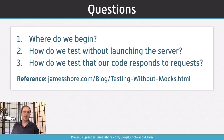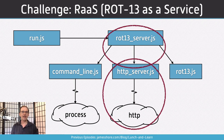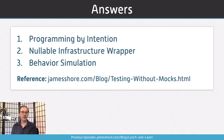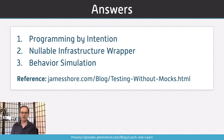Let's get back to the challenge. We want to build Route 13 as a service, and the question is: where do we begin, how do we test without launching the server, and how do we test that our code responds to requests? Three answers: first, we're going to begin by programming by intention. We're going to use nullable infrastructure wrappers to test without launching the real server. And we're going to test that code responds to requests by using behavior simulation. Let's look at each one in turn.